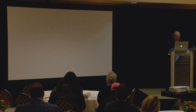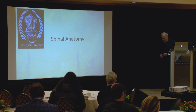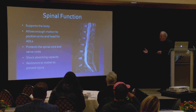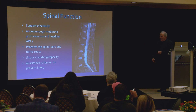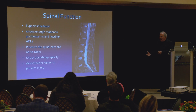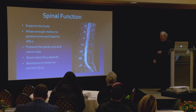We're going to start with spine anatomy. What does the spine do? Everybody knows, but let's define it. It supports the body, obviously allows enough motion to position the arms and the head for activities of daily living. It protects the spinal cord and nerve roots. It has shock-absorbing capacity, and it's resistant to motion to prevent injury.